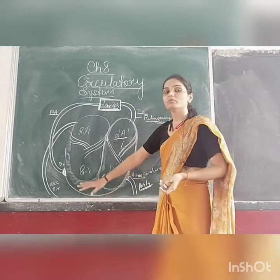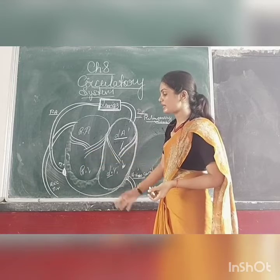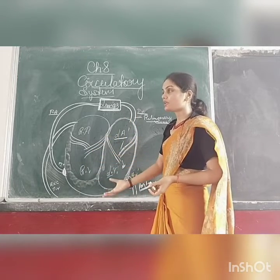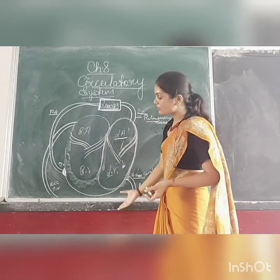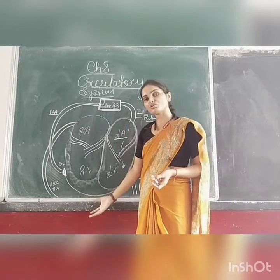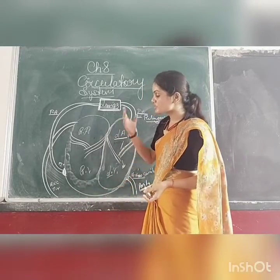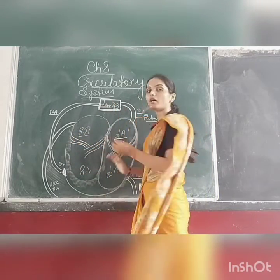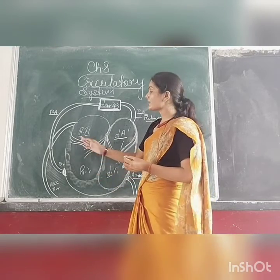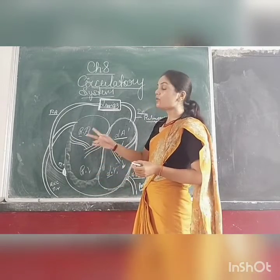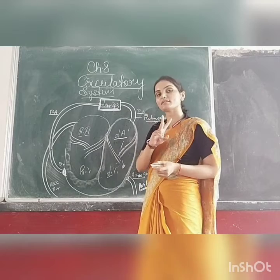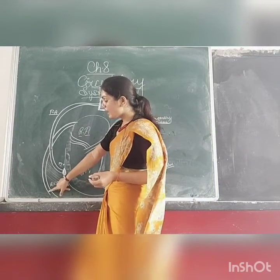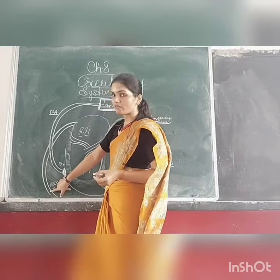From the aorta, the blood goes inside the body tissues and becomes deoxygenated. Now where does this deoxygenated blood go? This deoxygenated blood goes into the right atrium of the heart with the help of two vessels: the anterior vena cava and the posterior vena cava.